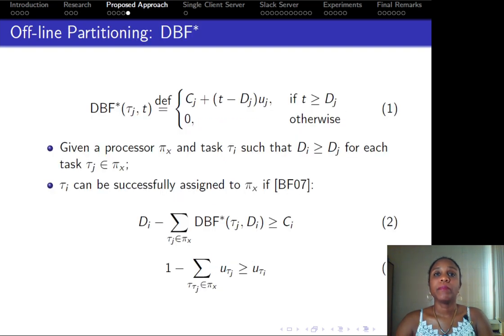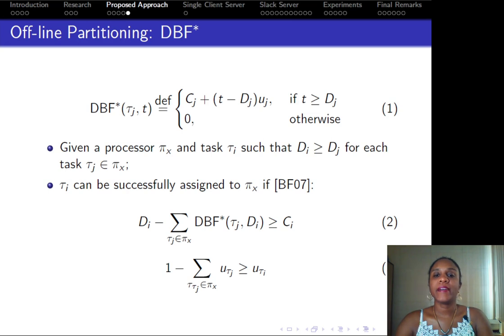The offline partitioning is carried out according to an approximation function of the demand-bound function, which we call BF-STAR. This function was proposed by Barua and Fisher and is stated according to equation 1. If we want to verify that a given task τ can be successfully assigned to processor Px, conditions 2 and 3 must hold. If τ cannot be assigned to any processor, then the partitioning procedure fails.